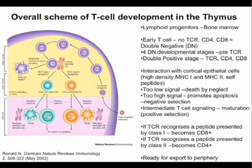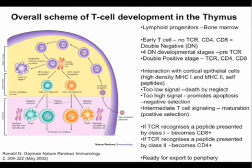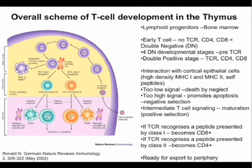I'm going to briefly introduce T cell development — just enough for you to understand where the different CD4 and CD8 populations come from. All lymphoid progenitors in the body originate in the bone marrow. A progenitor then travels to the thymus, and it's in the thymus where T cells differentiate and become T cells. This early lymphoid progenitor goes through a couple of different stages of differentiation. In these early stages, the cells don't express a T cell receptor and don't express either CD4 or CD8 — so they're called double negative cells.